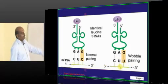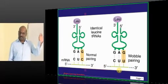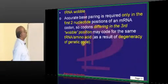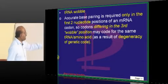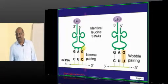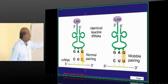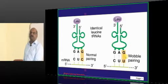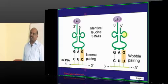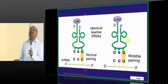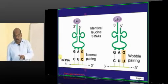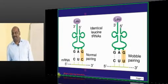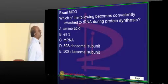Accurate base pairing is required only in the first two nucleotides, and the differing third position is called the wobble position. So CUC or CUA — no problem, CU is common, and leucine shall be loaded. Because of this wobbling, it led to the degeneracy of the genetic code, meaning two different codons can still code for the same amino acid. The wobbling of the third position of the tRNA is responsible for the degeneracy of the genetic code.